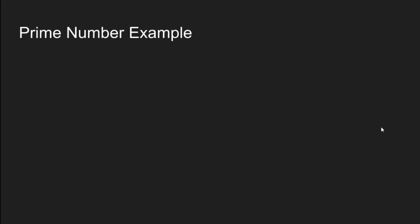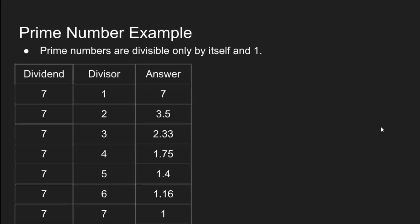Now let's jump into the program. The program definition says: check whether the number is prime or not. Prime numbers are divisible only by themselves and one. For example, let's take seven. Seven divided by one gives you seven. Seven divided by two gives you 3.5, which is not perfectly divisible. Perfectly divisible means the result of division doesn't contain a fractional part.